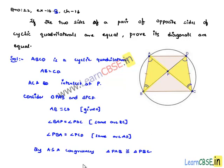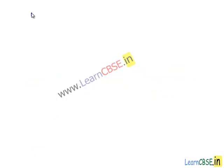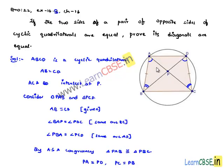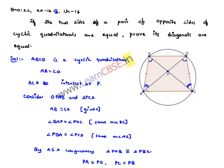Therefore, we can say PA is equal to PD, and PC is equal to PB. Let us add both of these: PA plus PC is equal to PB plus PD. Now, from the figure, PA plus PC is AC, which is equal to PB plus PD, which is BD.